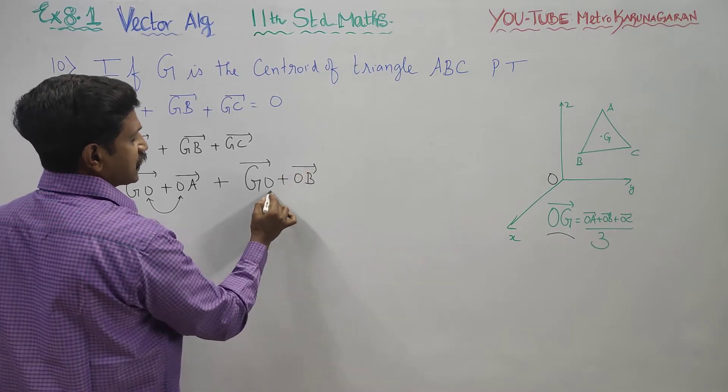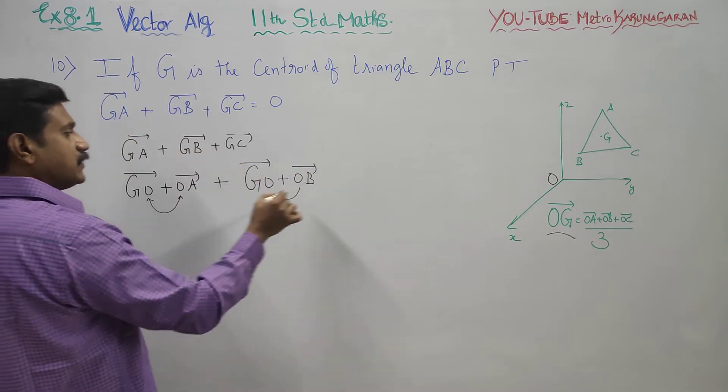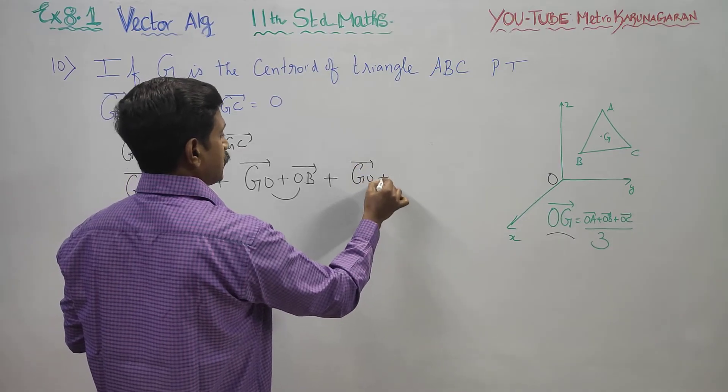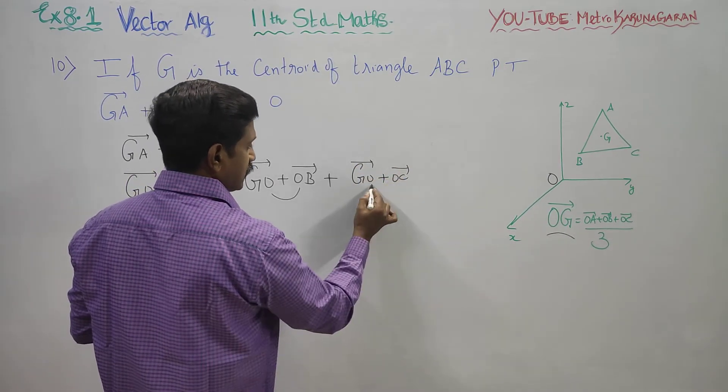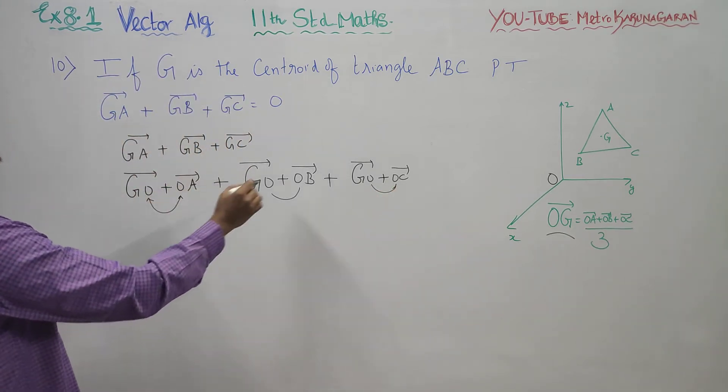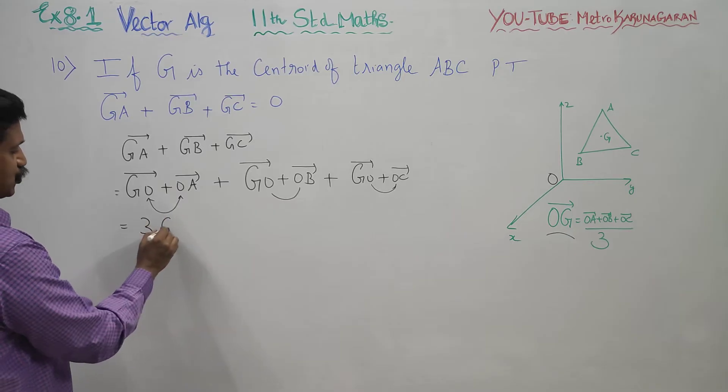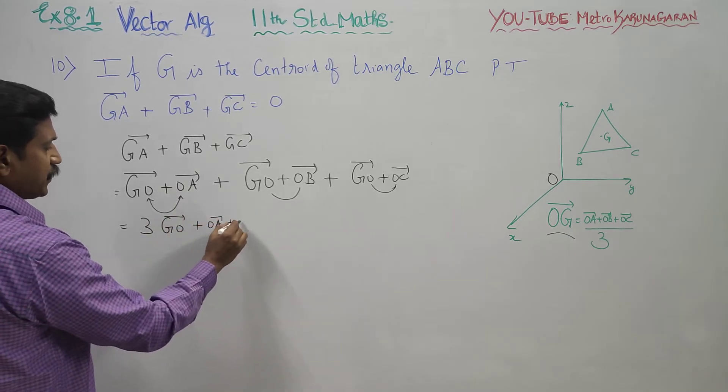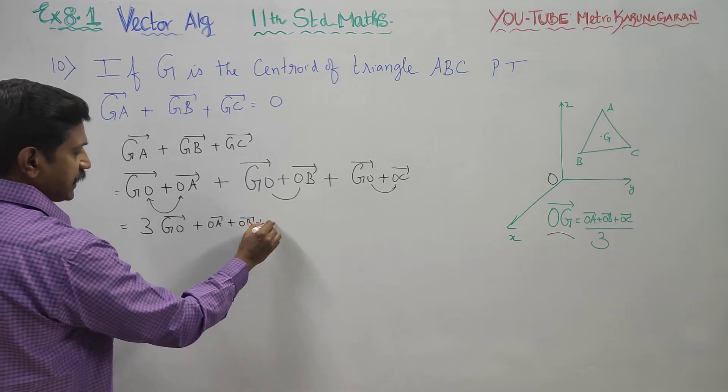And GC vector equals GO plus OC. Therefore, combining these three, you get 3 times GO vector plus OA vector plus OB vector plus OC vector.